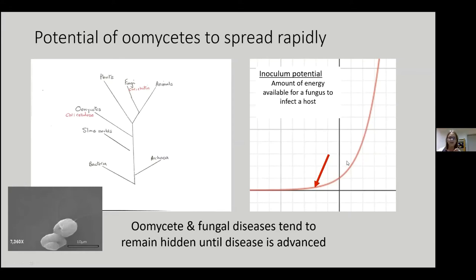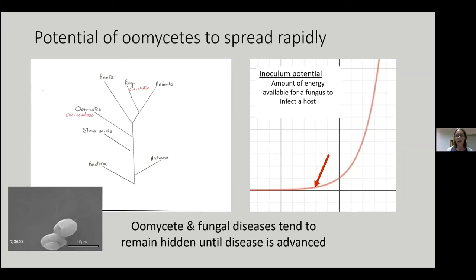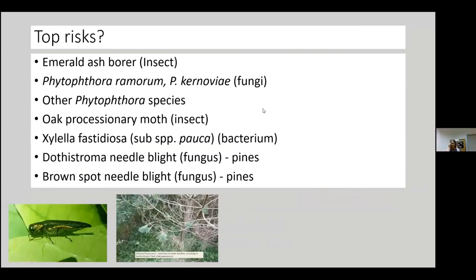There's another important feature of fungi and microorganisms known as inoculum potential — the amount of energy available for a fungus, bacterium, or oomycete to infect its host. They remain completely hidden, growing and building up their energy and mass, until they reach a sudden threshold, and then there's an explosion of infection. This is what happened with ash dieback. Five years ago I was walking my lanes thinking there was no ash dieback here — and within six months I was looking at every single tree thinking, what's happening? This disease had got into all of the trees. That's because of this build-up of inoculum potential.